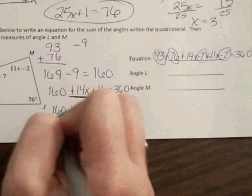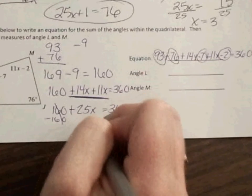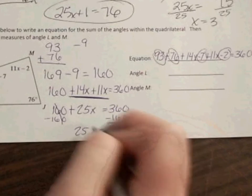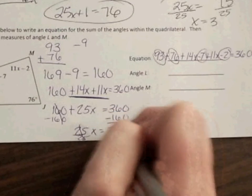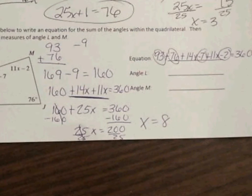So now you solve. Subtract 160. That zeroes out. I get 25x equals 200. Divide by 25. So x equals 8.